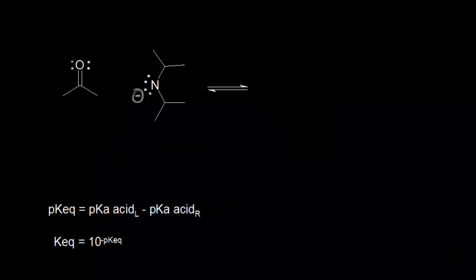You've already seen how to form enolate anions. In this video, we're going to look in more detail at how to form enolate anions from ketones. The ketone we have here is acetone. To find our alpha carbon, we just look at the carbon next to our carbonyl carbon. This could be an alpha carbon, and this could be an alpha carbon. Each one of those alpha carbons has three alpha protons, so there's a total of six.